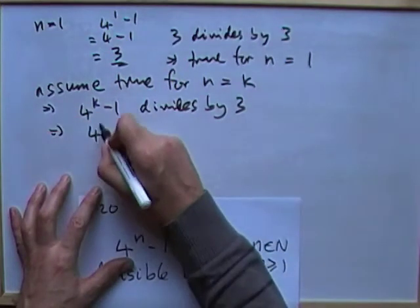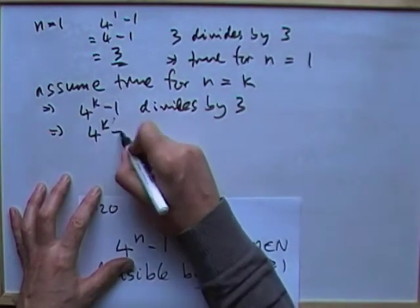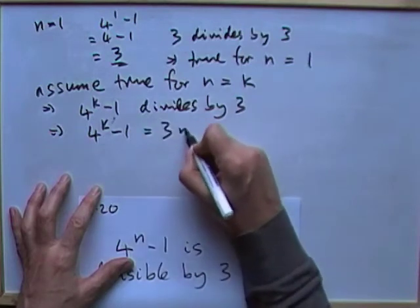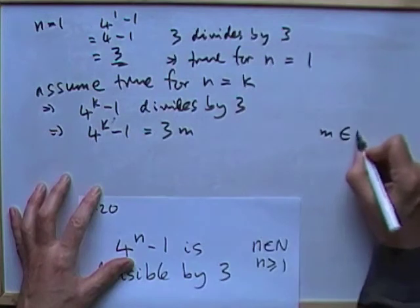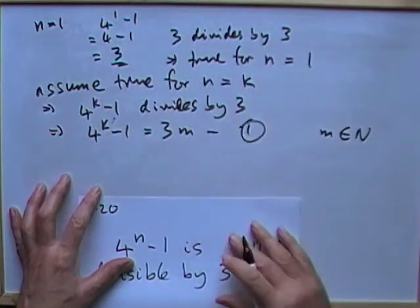Which means that 4 to the k minus 1 will be 3 times something, some number m, where m will be some natural number. Call that 1. That's the inductive hypothesis.